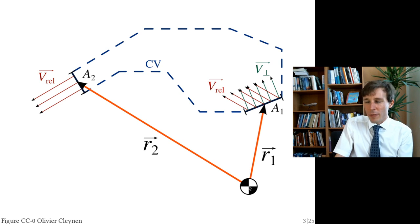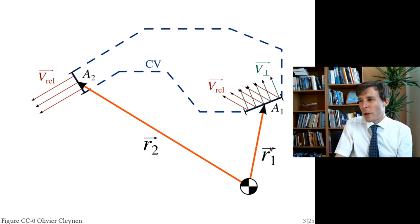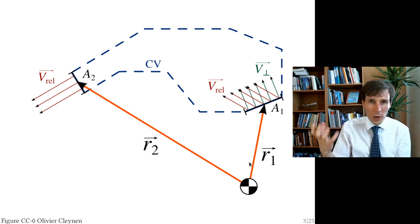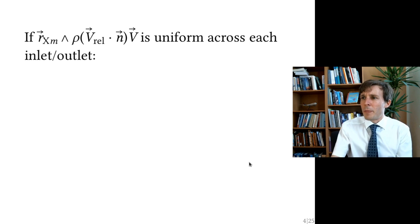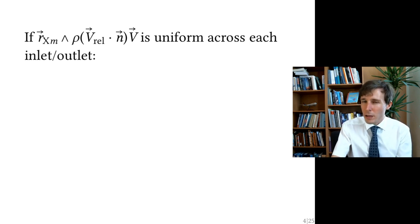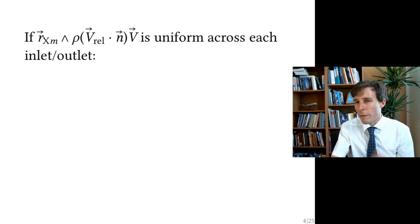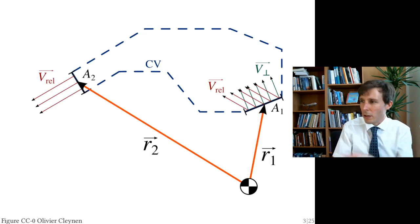Positions are measured from the reference point using a position vector r — like a radius vector. If you have inlets and outlets with uniform flow, where velocity vectors are the same across the inlet and across the outlet, the equation simplifies.